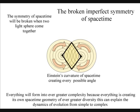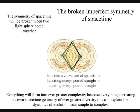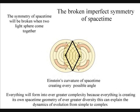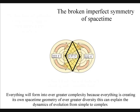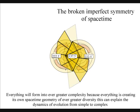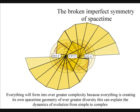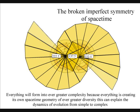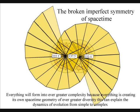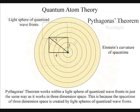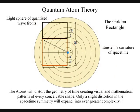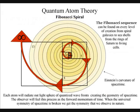The atoms will distort the geometry of time, creating mathematical patterns of every conceivable shape. The same basic method of pattern formation, the same mechanism of symmetry breaking, governs the whole universe of organic and non-organic matter. Everything will form into ever greater complexity, because everything is creating its own space-time geometry of ever greater diversity. This can explain the dynamics of evolution, from simple to complex.